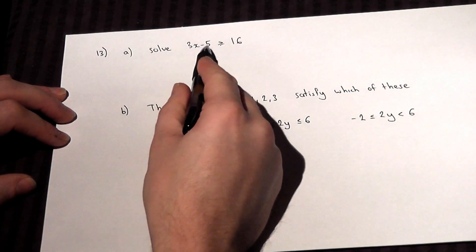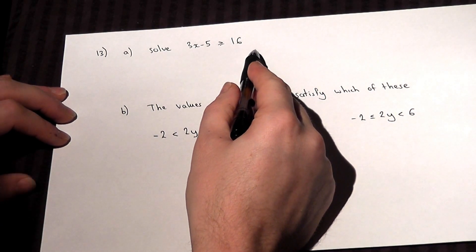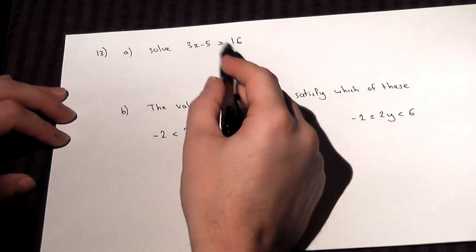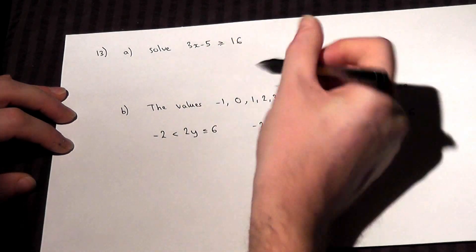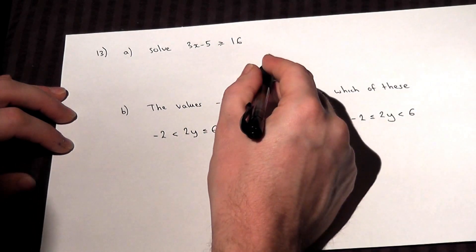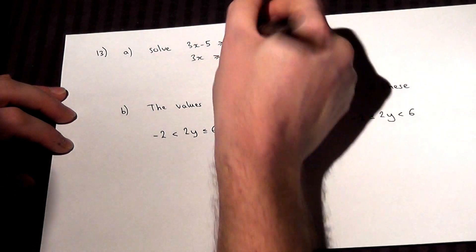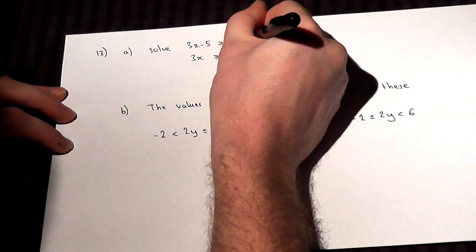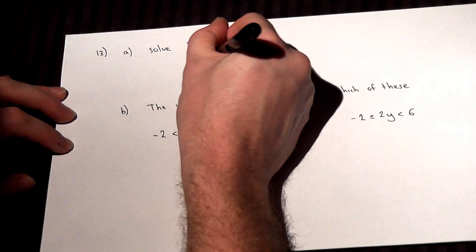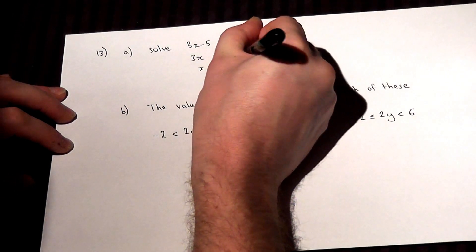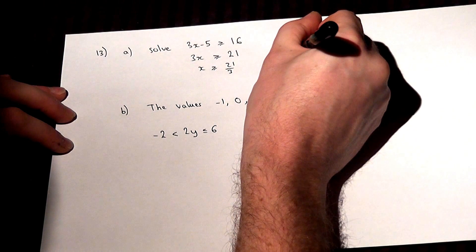We solve inequalities in the same way as normal equations — we want x either bigger or less than. Now there's a minus 5, so you have to add 5 to both sides. So 3x is greater than 16 plus 5, which is 21. We then divide by 3, so x is greater than 21 over 3. So x is greater than 7.